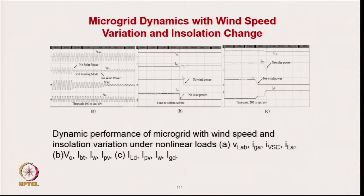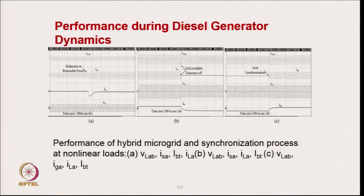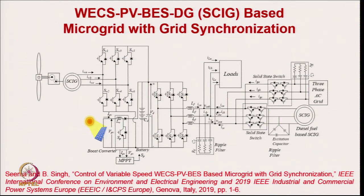Dynamics corresponding to solar generation changes and wind generation changes are shown. Performance with the DG set is demonstrated — how the system goes to DG set operation when load changes, grid disappears, and when grid reappears the system synchronizes back. The generator operates for minimum time. Another configuration uses a variable-speed wound-rotor generator for wind, solar generation with battery, a local load, a DG set with synchronous generator, and a three-phase grid. You can synchronize to the DG set or to the grid, operate in islanding mode if enough solar and wind energy plus battery is available, or take from the DG set if grid is absent.